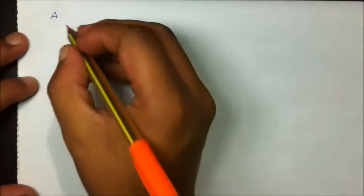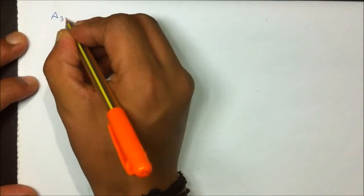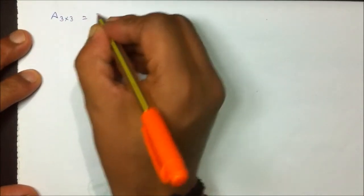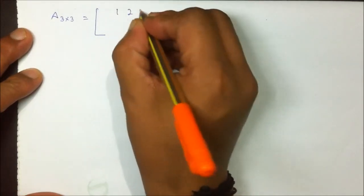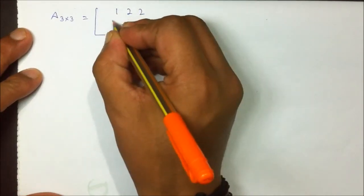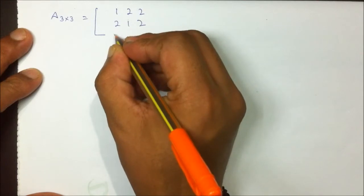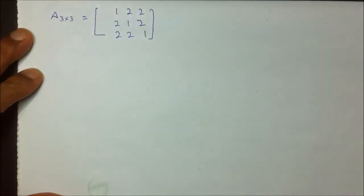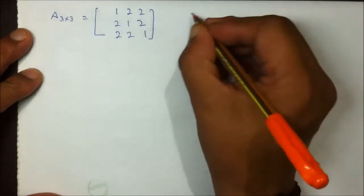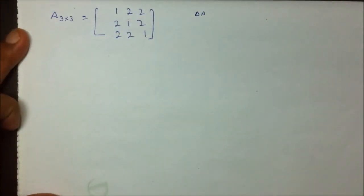Now for an example, I need to find the inverse of a 3×3 matrix: [[1, 2, 2], [2, 1, 2], [2, 2, 1]]. First I will find the determinant of A.